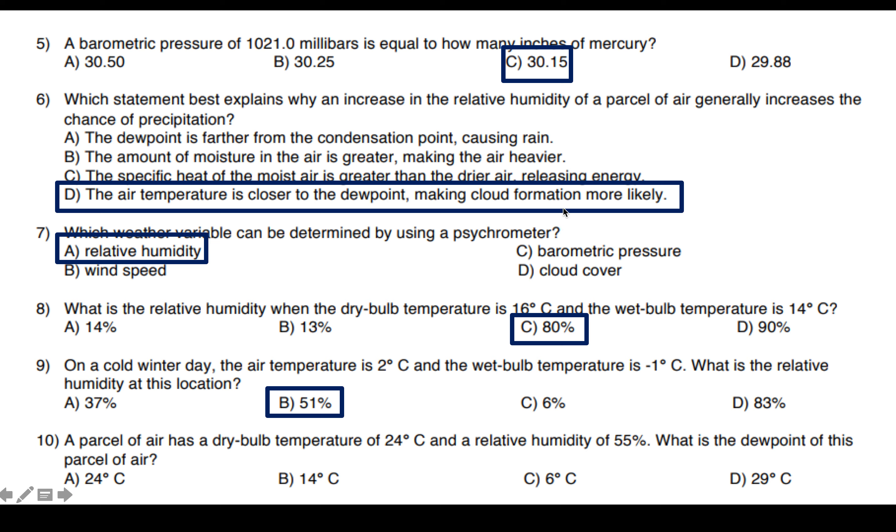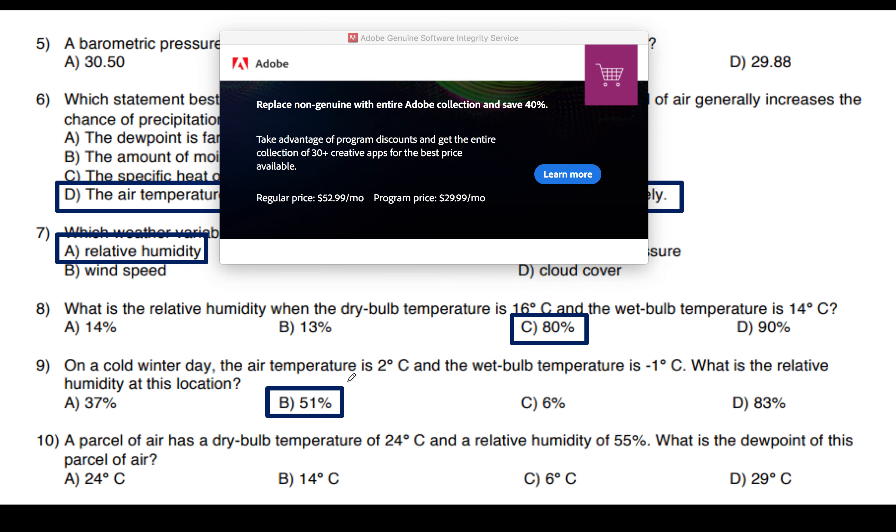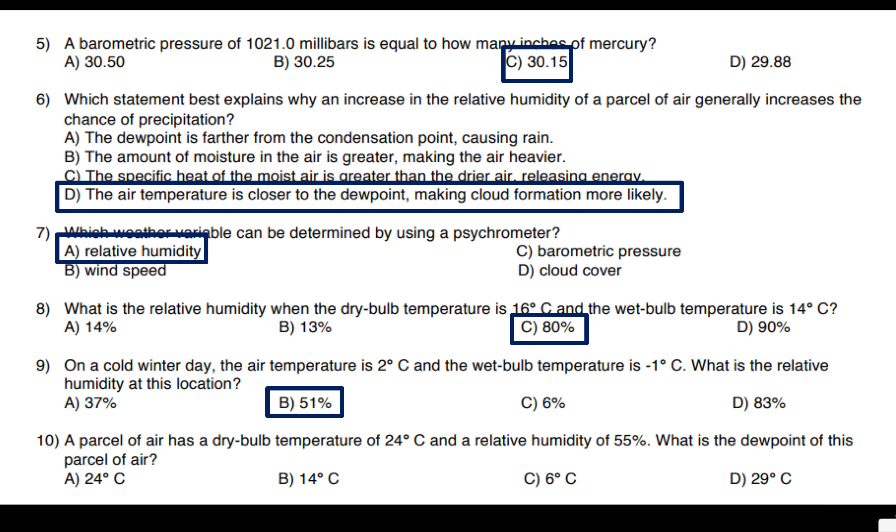A parcel of air has a dry bulb temperature of 24 degrees Celsius and a relative humidity of 55. What's the dew point? So, we ask ourselves, how can I solve this if I don't have the wet bulb or the difference? Well, you need to figure out the difference, and then you need to go to the dew point. We know the humidity is 55. We know that the dry bulb is 24.